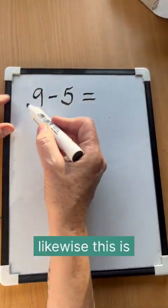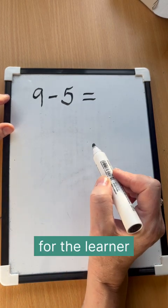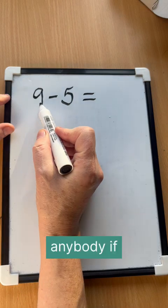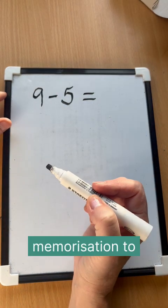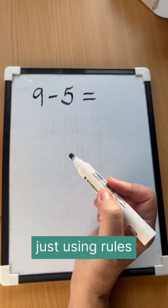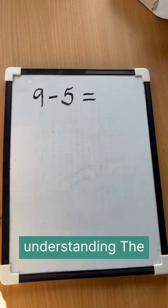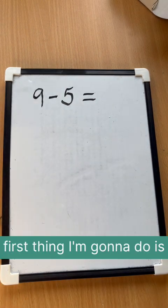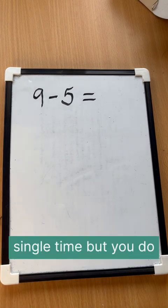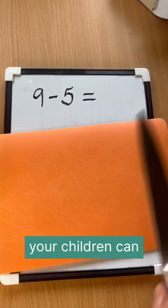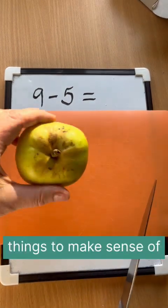So likewise, this is meaningless unless it conjures up some concept images for the learner. Not just children, anybody. If you try and engage in these symbols, you will only have memorization to rely on, and that is just using rules, tricks, facts that someone has taught you instead of understanding. So the first thing I'm going to do is make it real. You don't have to do this every single time, but you do have to have done it enough that your children can call upon these sorts of things to make sense of something like this.